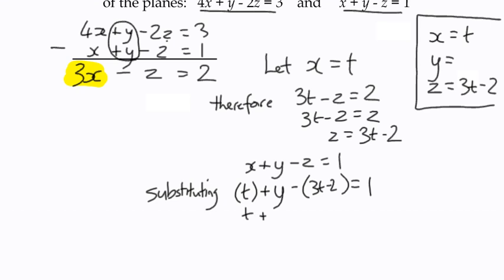What have I got? Multiply out that negative bracket. So t minus 3t is negative 2t, y minus 2t plus 2 equals 1, so y is equal to 2t minus 1.